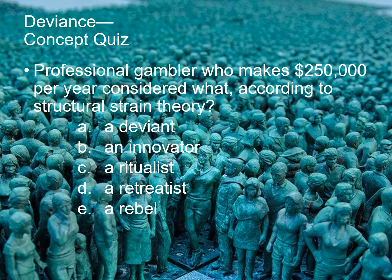A professional gambler who makes $250,000 per year is considered what, according to structural strain theory? A. A deviant, B. An innovator, C. A ritualist, D. A retreatist, or E. A rebel. The answer is B, an innovator.